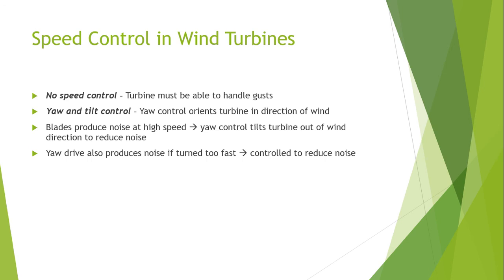The yaw drive also produces noise if turned too fast, so it must be controlled to reduce noise pollution. Yaw refers to the rotation of the entire wind turbine on the horizontal axis. Yaw control ensures that the turbine is constantly facing into the wind to maximize the effective rotor area and extract more power. Because wind direction and speed can vary quickly in minutes, the turbine may misalign with the oncoming wind, causing power loss. Therefore, yaw drive control is also important.